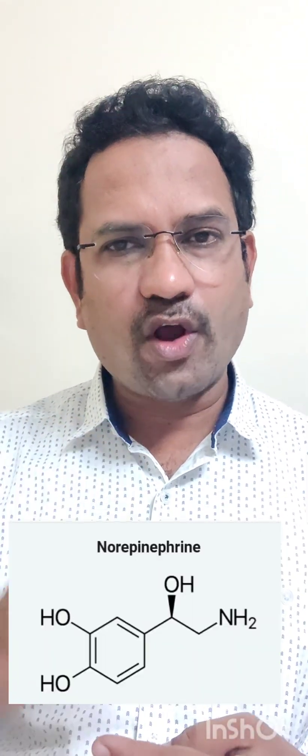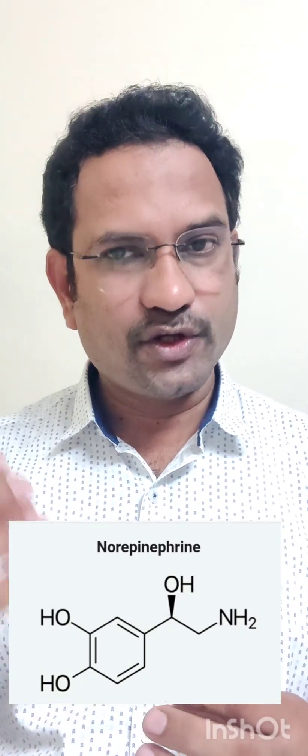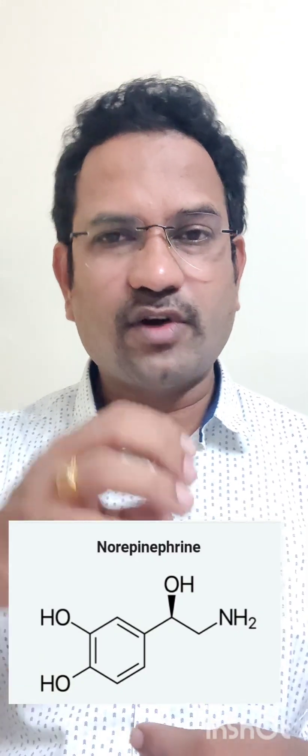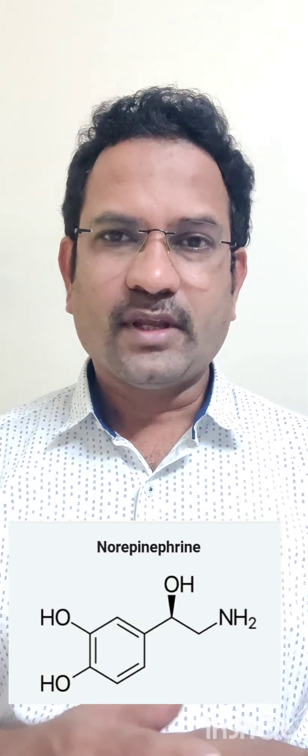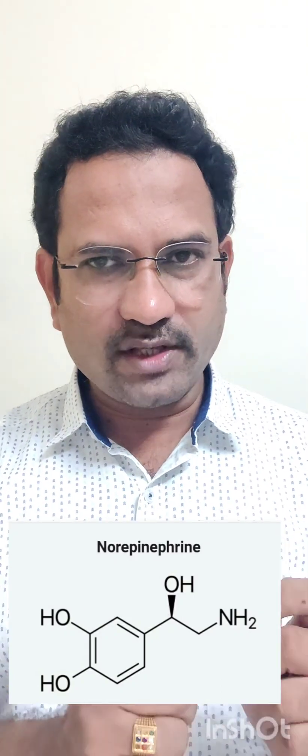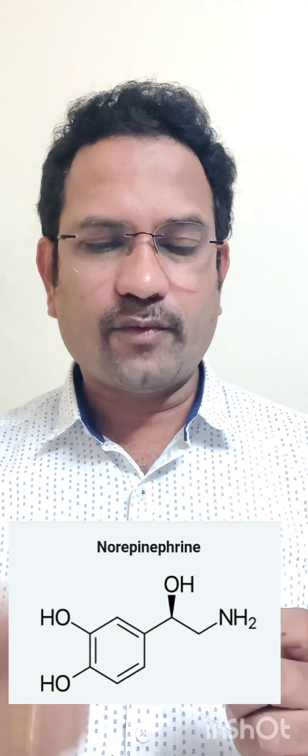Let us take a drug as an example and see the structure and structure-activity relationship. We will look at norepinephrine, which is also known as noradrenaline. It is a biogenic amine — that means it is synthesized in the human brain and it is an amine, hence it is called a biogenic amine. Now it is a neurotransmitter, meaning a molecule which is synthesized in neurons and transmits information from one neuron to another neuron or to peripheral organs.